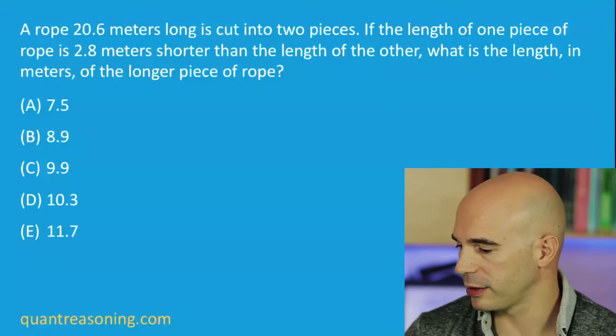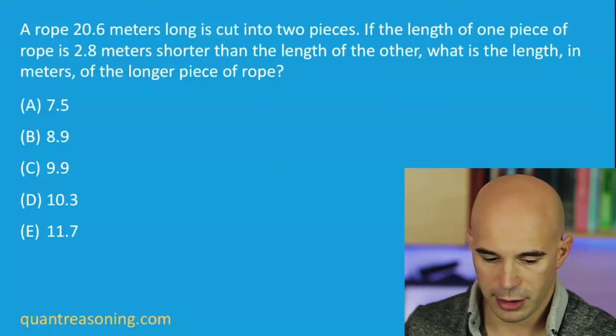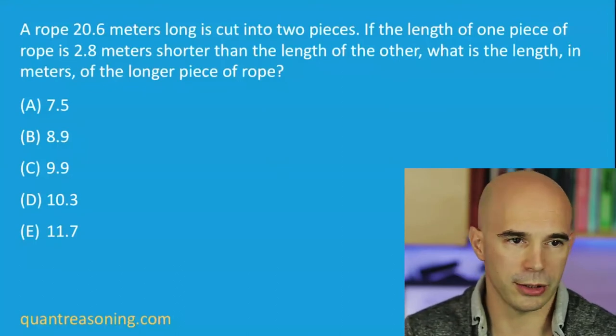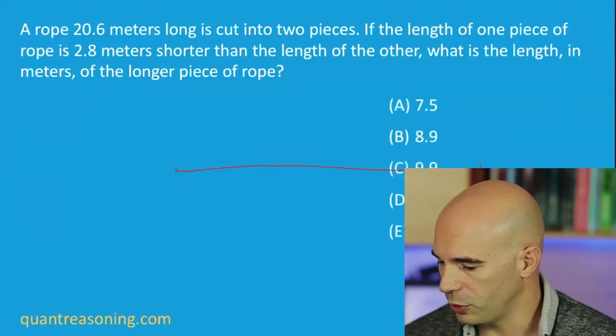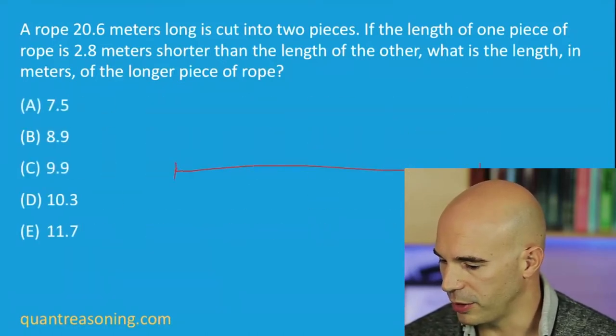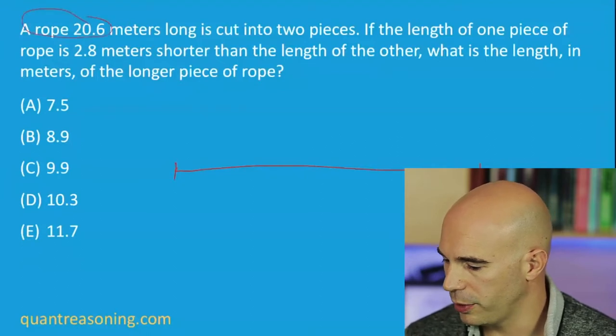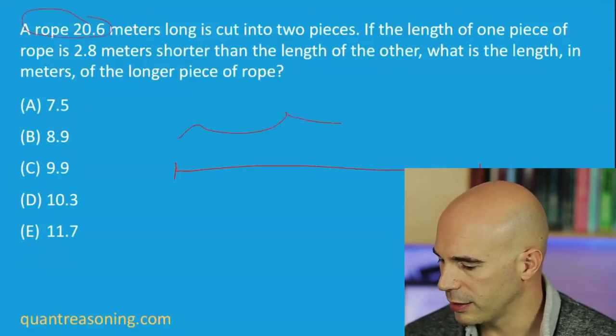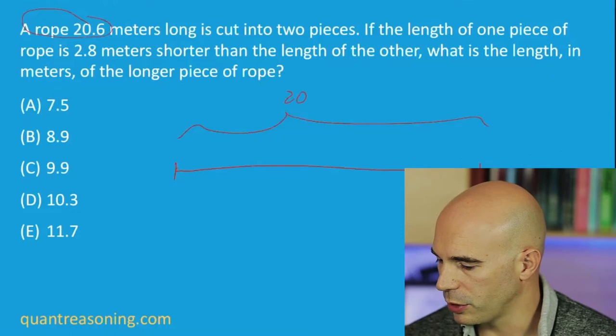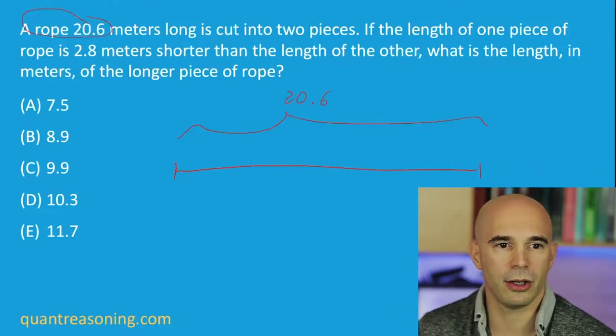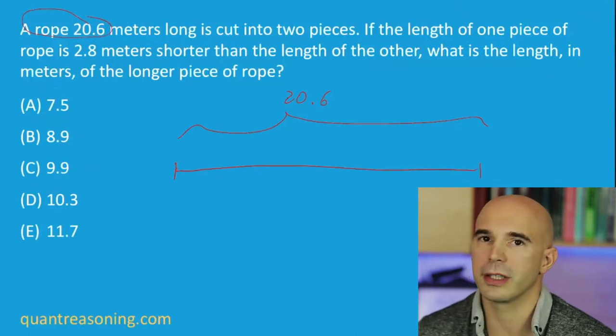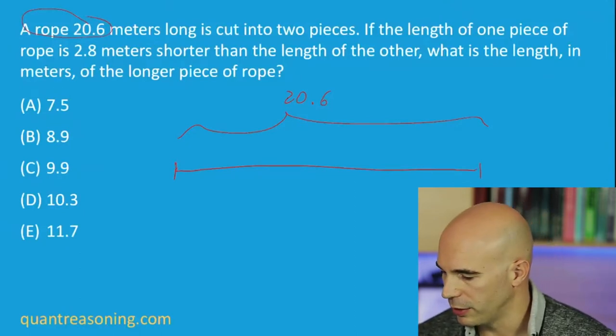I'm not going to show you an algebraic solution at all for this question. It's a pretty straightforward solution, and it's very easy to find on Google. It really lends itself to drawing a number line, because they're describing a rope that's 20.6 meters long. So there's the total length of the rope, and then they're saying we're going to cut it into two pieces, a long one and a short one, and we're given the difference between those lengths.